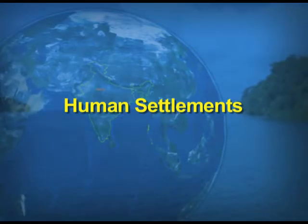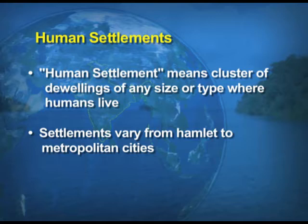The topic today is for students of Class 12 from the geography book 'India People and Economy,' and the chapter is Human Settlements. Human settlements means the cluster of dwellings of any size or type — the size may vary and the type may also vary. Where humans live is known as a settlement.